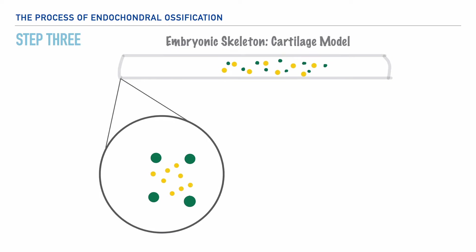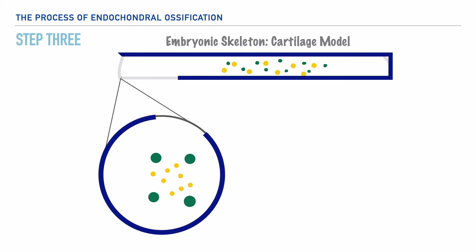and it's these chondrocytes that will differentiate again and ultimately become cartilage. Shortly after the differentiation of the mesenchymal cells to chondrocytes, we begin to see the development of a membrane that surrounds and protects this cartilage model. This membrane is referred to as the perichondrium, and it's this perichondrium that serves as a protective layer of tissue for the cartilage model.